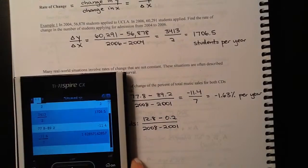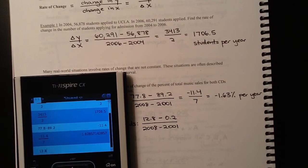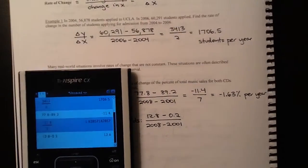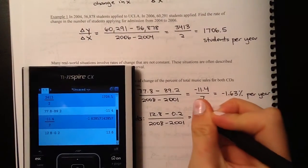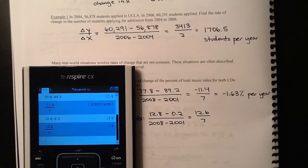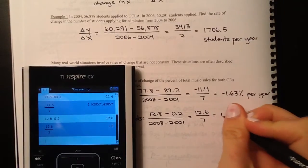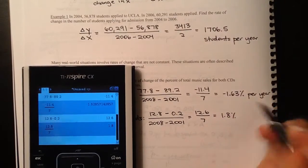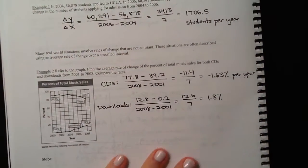So 12.8% minus 0.2%. So that's an increase of 12.6% over a course of seven years. So divide by seven years, and it's going up by about 1.8% per year.